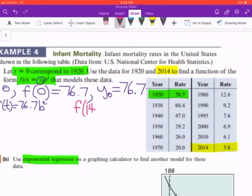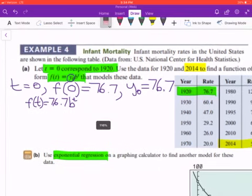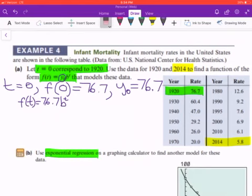Actually, I shouldn't be saying that. I'm not sure what is the correct value for t, but let's find out. So if the year 1920 was considered to be t equals 0, if we get the difference of what is the year 2014, 2014 minus 1920, we get 94.